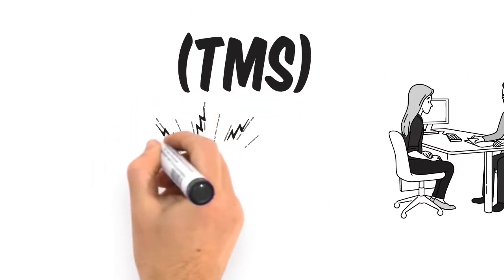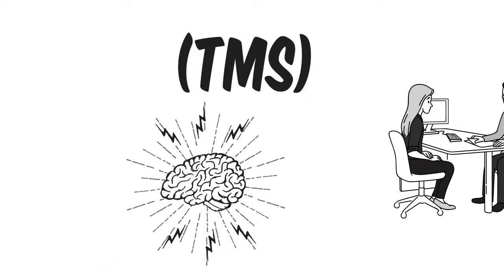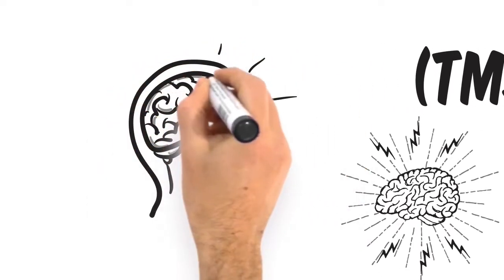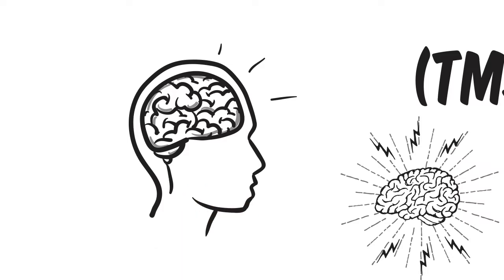TMS works by sending a magnetic pulse to the area of the brain that studies have shown are not functioning at optimal strength in the dorsal prefrontal cortex, approximately left front above your left eyebrow.